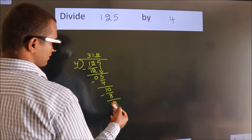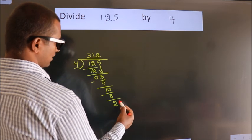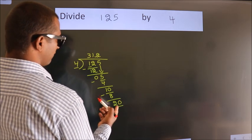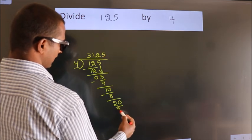After this, we already have the decimal. So directly take 0. So 20. When do we get 20 in the 4 table? 4 fives, 20.